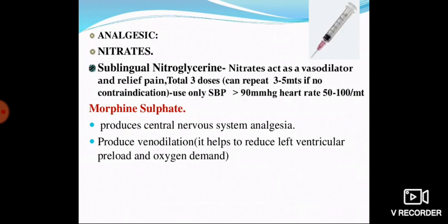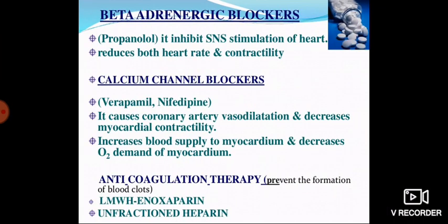Morphine sulfate produces central nervous system analgesia and produces venodilation, helping to reduce preload. Beta-adrenergic blockers — for example, propranolol — inhibit sympathetic nervous system stimulation of the heart, reducing heart rate and contractility.